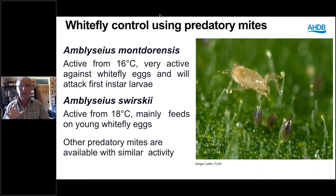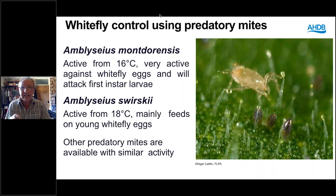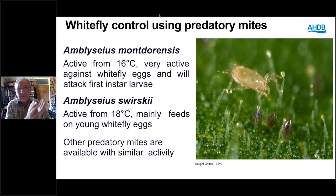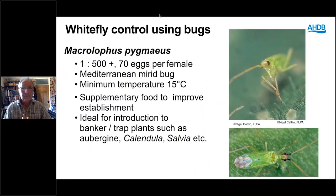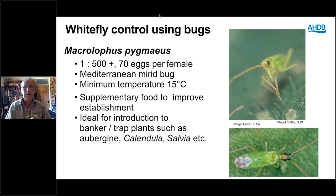Looking at the predators for whitefly: predatory mites — Amblydromalus montdorensis, Swirskii, Degenerans — a whole range. These generally feed on the egg stage of the whitefly, although montdorensis and Swirskii will feed on younger first instar larvae. They must be in contact with the plant — there's no point putting them in a sachet above the crop. Macrolophus is one of my favourite predators. It will take all species of whitefly, will also feed on leafminer, spider mites, has a go at thrips, and is effective on mealybug and a whole range of other pests.